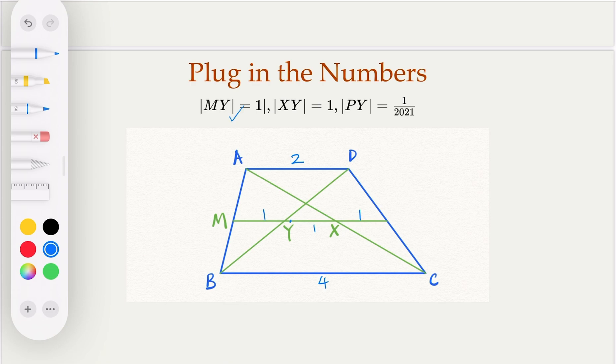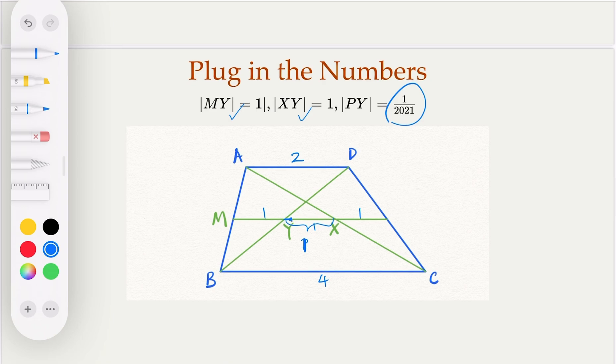Now this is one over 2020, because the whole length is one, and PY is the smaller one. So this is P here. So what is the PN? PN is equal PY plus, this Y is the midpoint here, plus MY. So equal 1 over 2021 plus 1. So in other words, it's 2022 over 2021. That's going to be the PN. We got everything ready to find the final answer of the area.